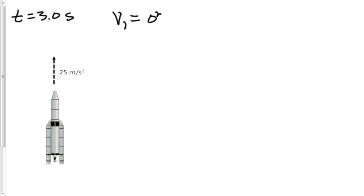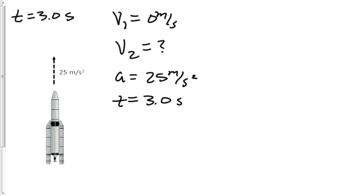Velocity 1 for the rocket is 0 meters per second. Velocity 2 is a question mark. Acceleration will be 25 meters per second squared. Time will be 3.0 seconds. And displacement will be a question mark.